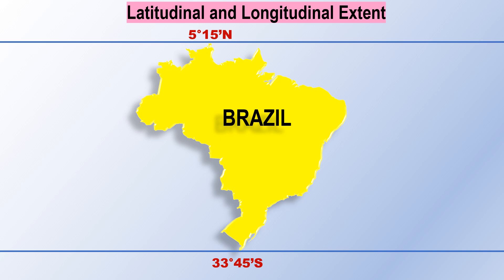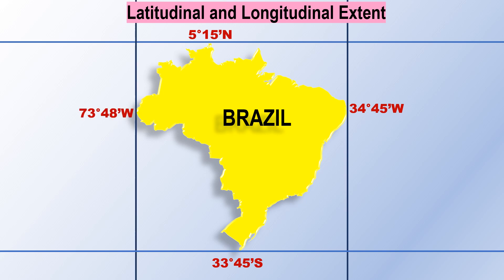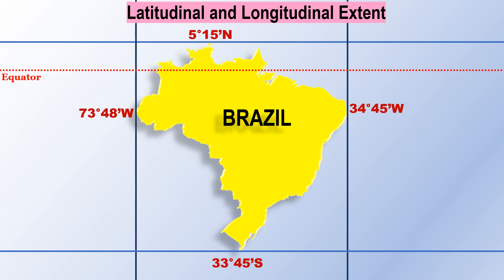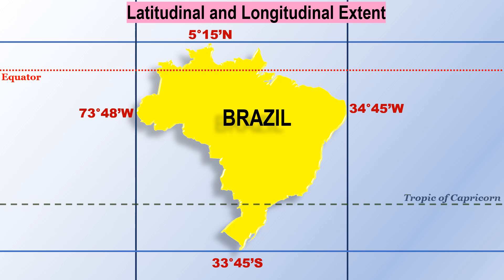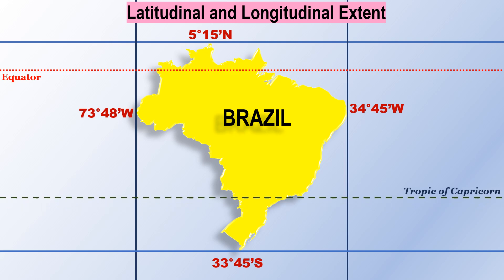The longitudinal extent of mainland Brazil is from 34 degrees 45 minutes west to 73 degrees 48 minutes west. If we subtract 34 from 73, the longitudinal extent of Brazil is 39 degrees, which is more than India. Therefore, Brazil is the fifth largest country of the world. The equator passes through the northern part of Brazil, and the Tropic of Capricorn passes through the southern part of Brazil.